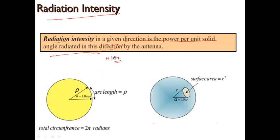The unit for radiation intensity is watts per steradian. The term steradian may be new — previously we used watts and similar units. Looking at this diagram of a circle, this is a 2D plot. However, antenna structures and their outputs are always three-dimensional, so we cannot use a 2D circle for calculation. We use the 3D equivalent, which is a sphere.